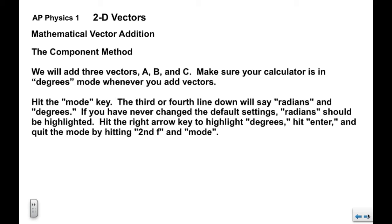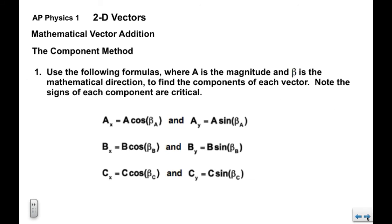If you hit the mode key on your calculator, the third or fourth line down will say radians and degrees. Hit the down arrow key until you get to that line, and then hit the right arrow key to get the cursor over degrees. Hit enter and then quit the mode by hitting second function mode. And now your calculator will be in degrees mode.